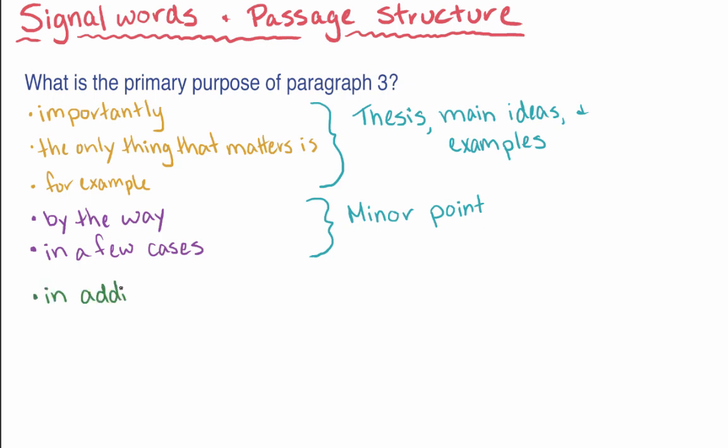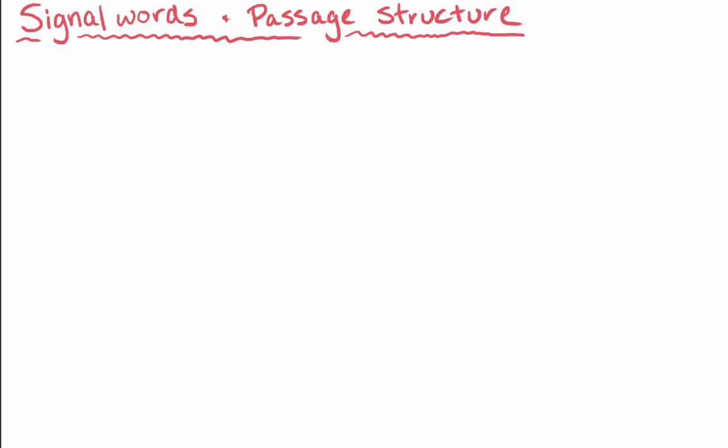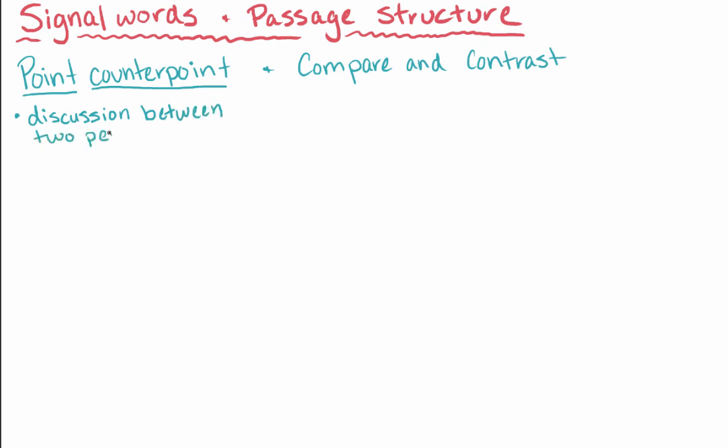Phrases like in addition to, therefore, and consequently can help you follow an author's argument. Considering the structure of the passage can also help you in similar ways. For example, two common text structures, point-counterpoint and compare and contrast, can also help you to identify distinctions being made by the author. A point-counterpoint text is almost like a discussion between two people. The author goes back and forth laying out points from two different sides. A compare and contrast text will generally first discuss the commonalities between two things, and then highlight the differences.